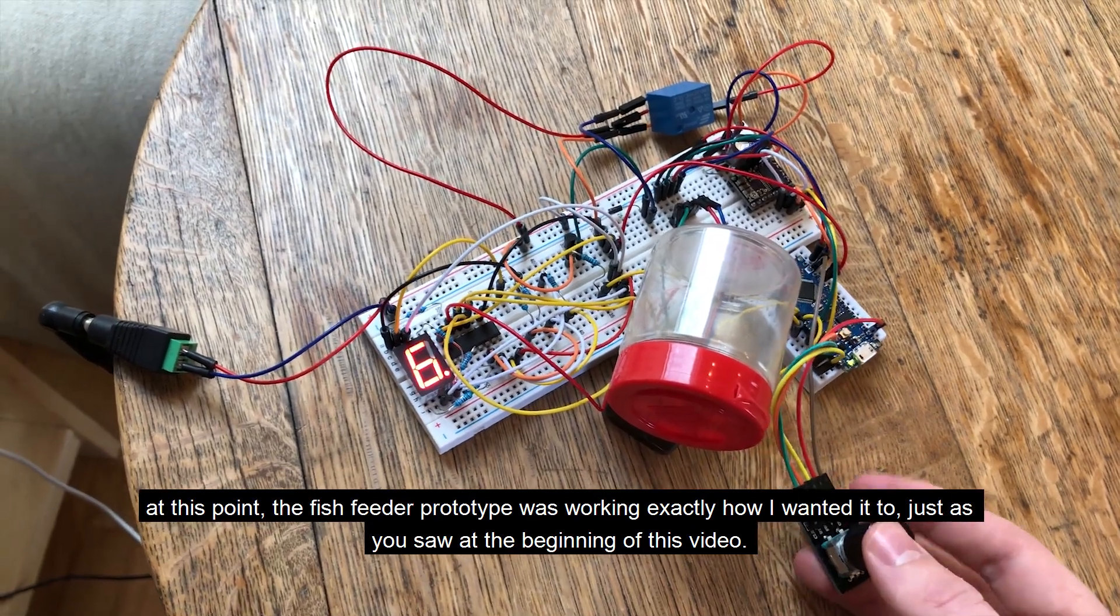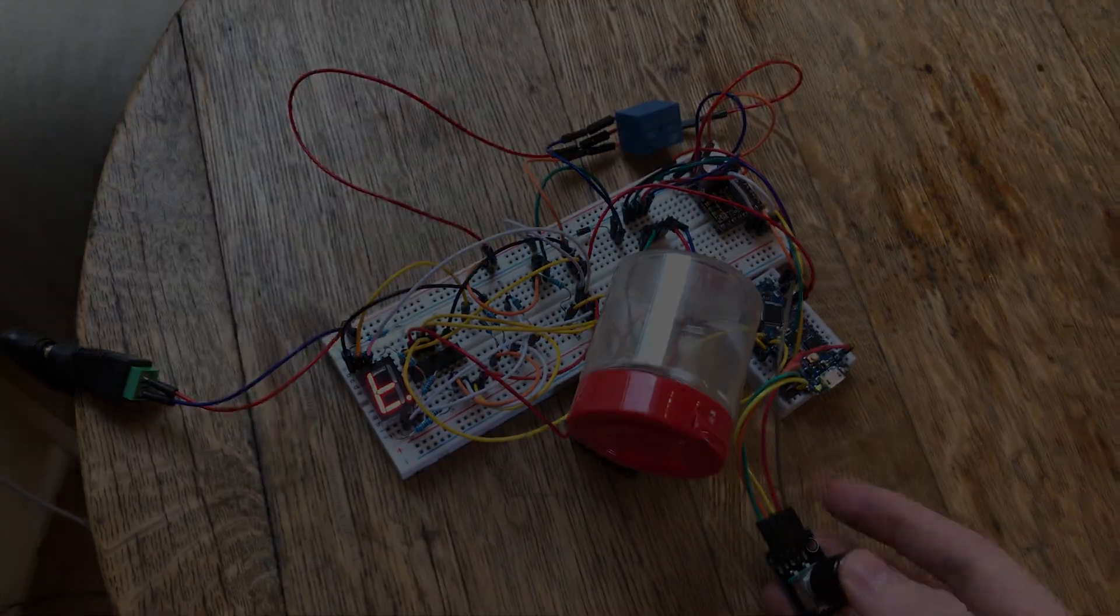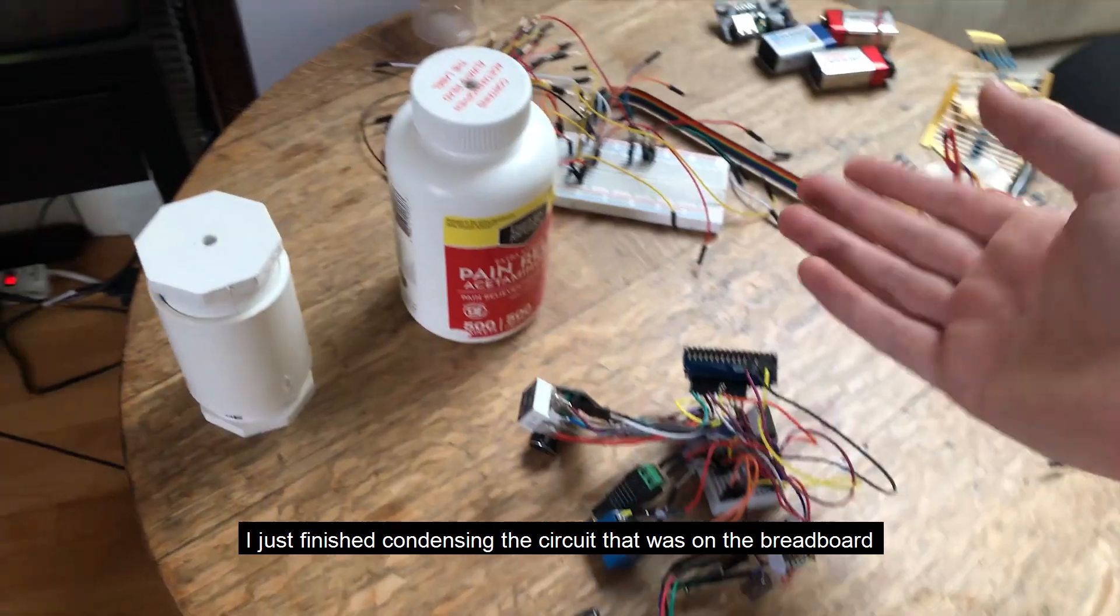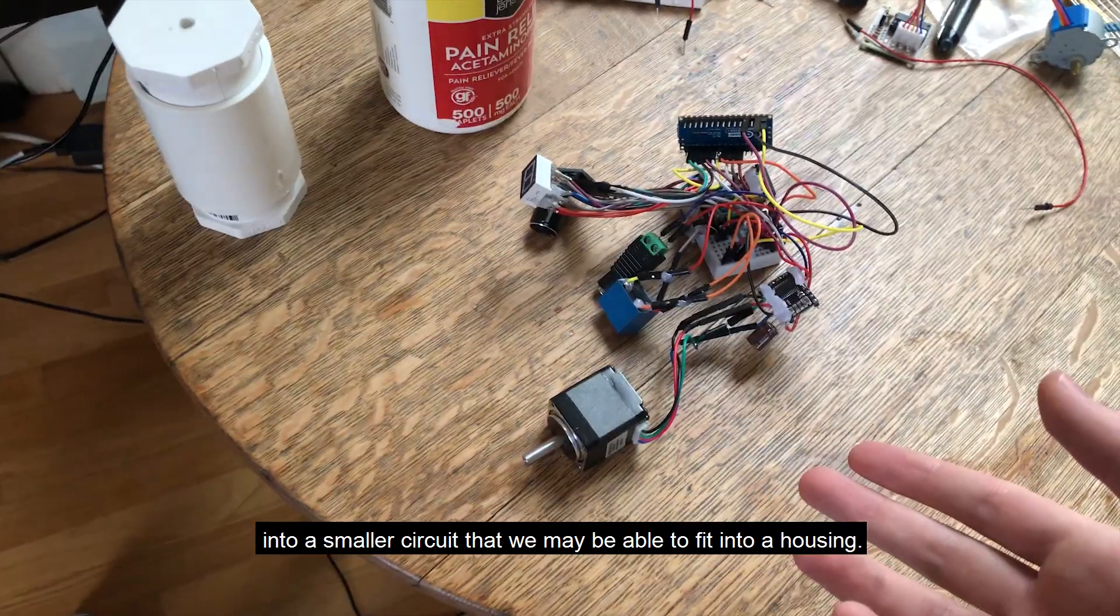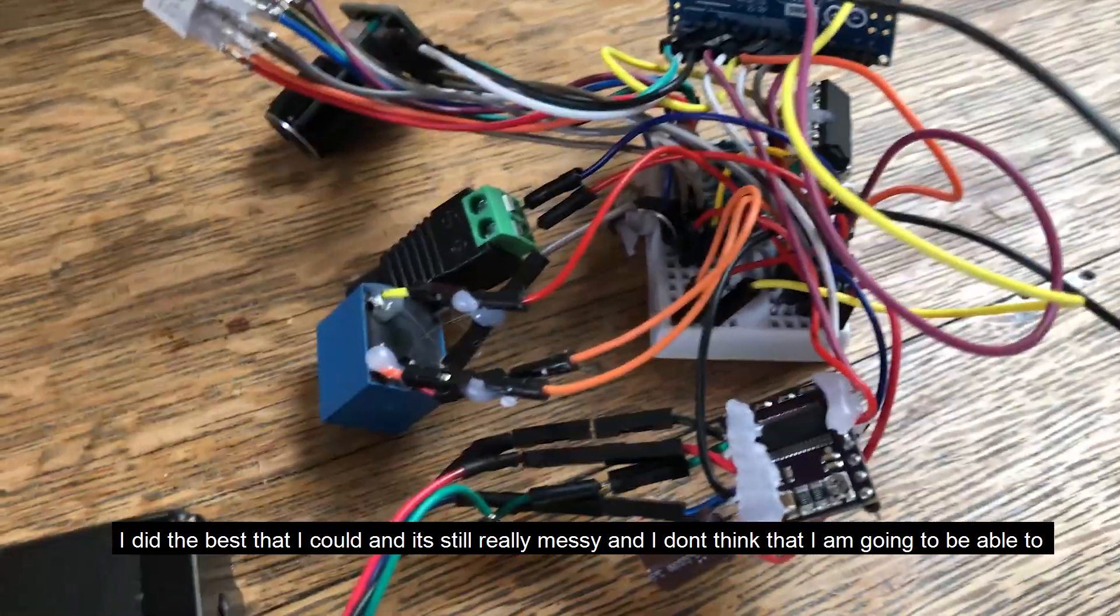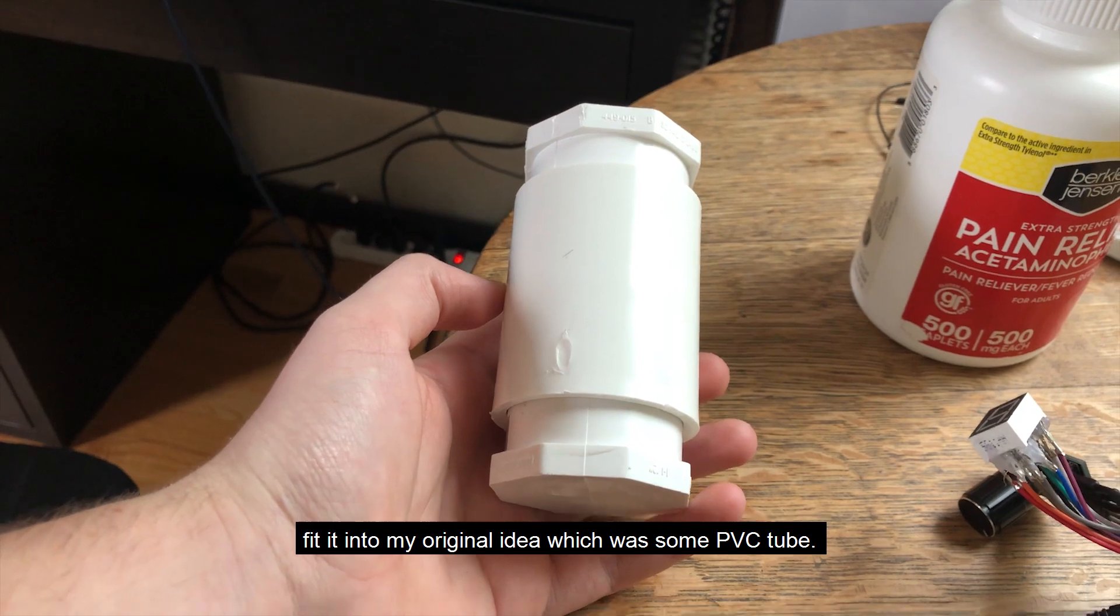I just finished condensing the circuit that was on the breadboard into a smaller circuit that we may be able to fit into a housing. I did the best that I could and it's still really messy, and I don't think that I'm going to be able to fit it into my original idea, which was some PVC tube. I just don't think that I can fit all of this wiring and mess into this PVC tube.